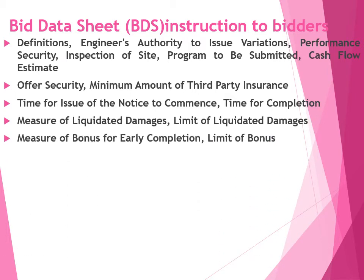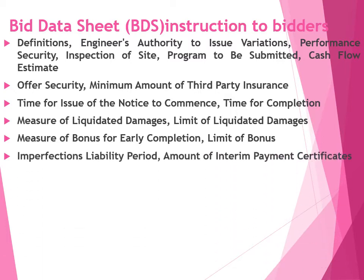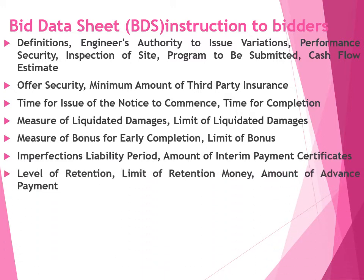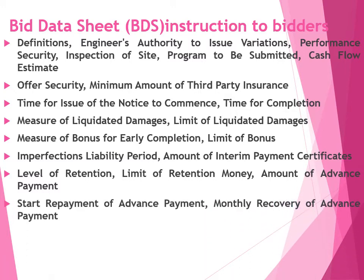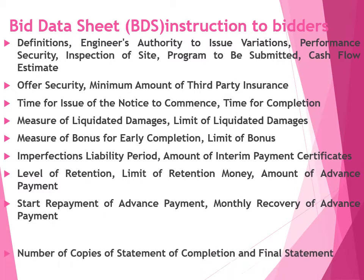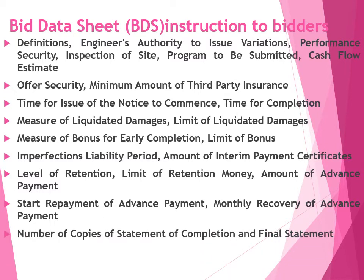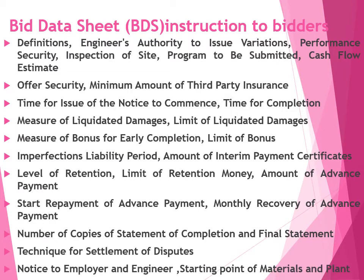Further instruction to bidders includes: time for issue of notice to commence, time for completion, measure of liquidated damages, limit of liquidated damages, measure of bonus, yearly completion, limit of bonus, defect liability period, amount of interim payment certificates, level of retention, limit of retention money, amount of advance payment, stop payment of advance payment, monthly recovery of advance payment, number of copies of statement of completion and final settlement, and techniques for settlement of disputes.